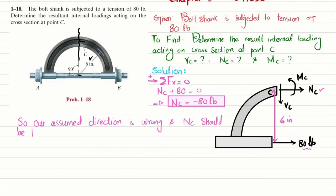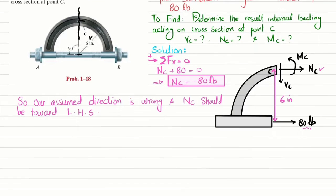Now we will find Vc using another equation of equilibrium: sum of all forces along y direction must equal zero, with upward force taken as positive. The only vertical force is Vc acting downward and there is no other vertical force, so minus Vc equals zero, meaning Vc equals zero.